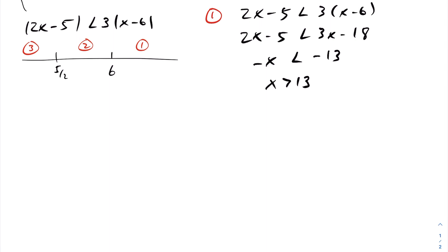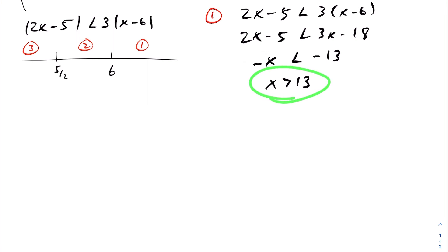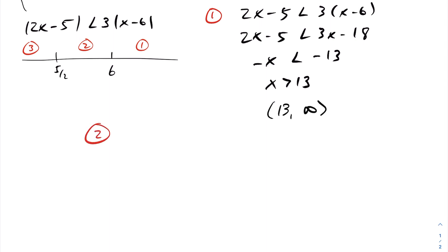After dropping the absolute values, I do my distribution and collect like terms. Watch out — when you divide across to isolate x by negative one, you must change the direction of the inequality. So the solution set for interval one is x greater than 13, i.e., from 13 to infinity.